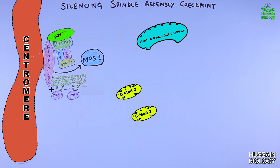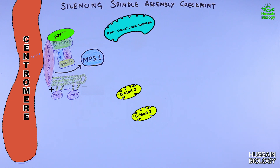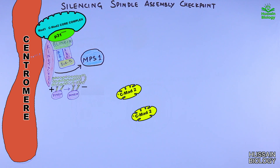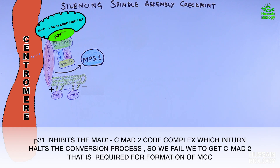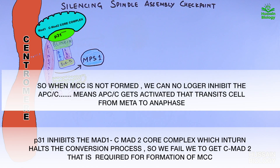The catch is that p31 inhibits this process of conversion of the open form of MAD2 to the closed form of MAD2, halting the formation of MCC because we no longer have the closed form of MAD2. This means the APC protein gets activated and the cell moves into anaphase, thereby silencing the spindle assembly checkpoint.